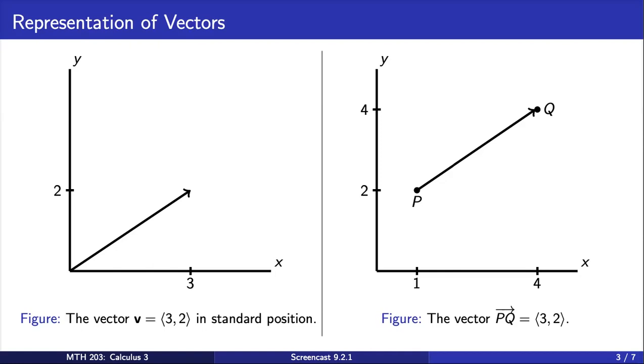When we use points to define vectors, we often refer to that vector using the names of the points, p and q, with an arrow over top. Note that this vector from p to q has x component 3 and y component 2, which is the same as the vector drawn in standard position on the left graph. So, the two vectors represented on this page are equal.